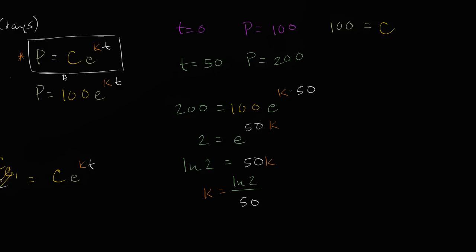And we're done. We can now write the particular solution that meets these conditions. So we can now write that our population, and I can even write our population as a function of time, is going to be equal to 100.